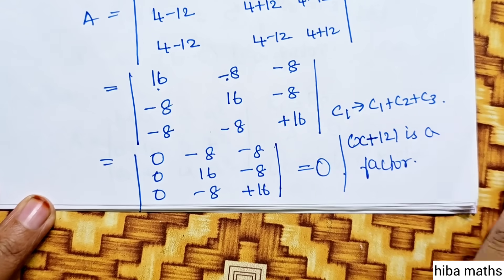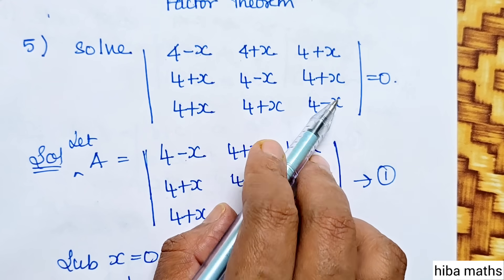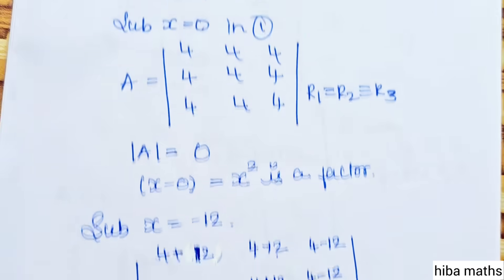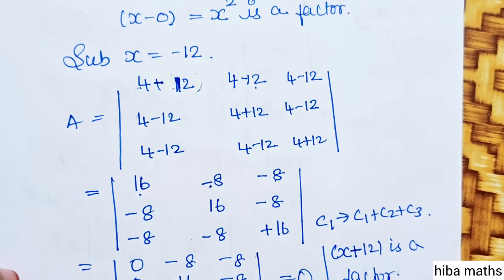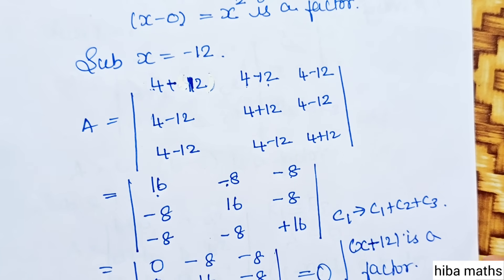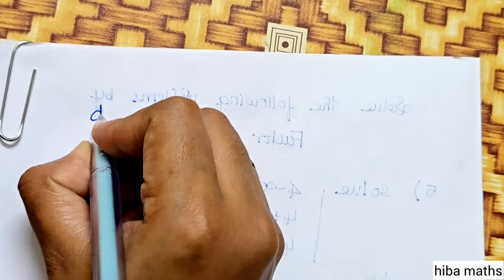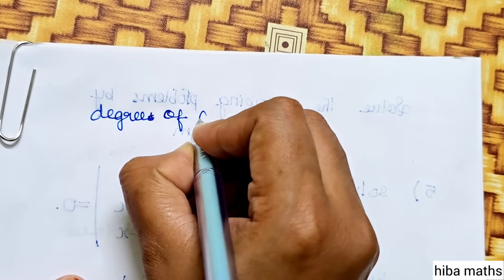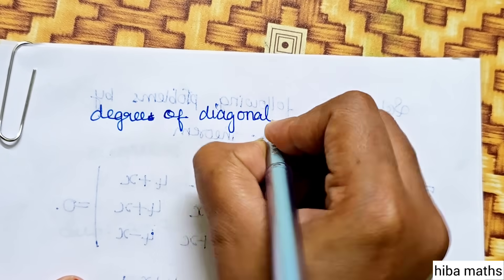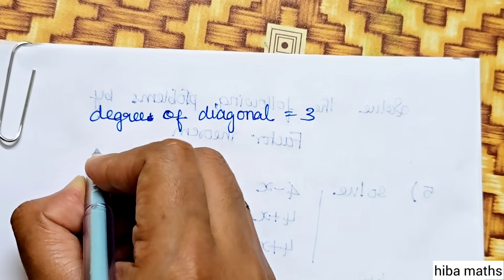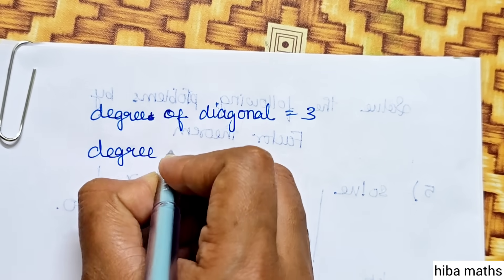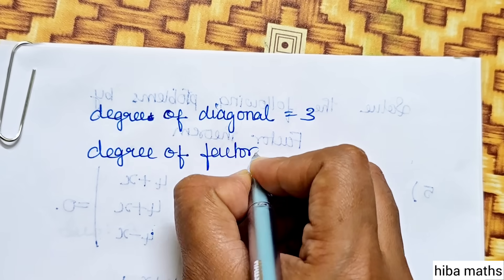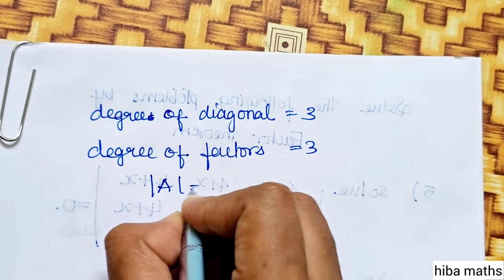Now we have two factors. The value of the diagonal equals 1 — here is 1, here is 1, here is 1. So the sum is 3 equal to 1. The degree of the factors is 3.